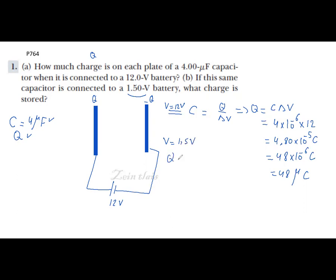Where q equals to C delta v equal to 4 times 10 minus 6 farad times 1.5 volt. The answer will be 6 micro coulomb.